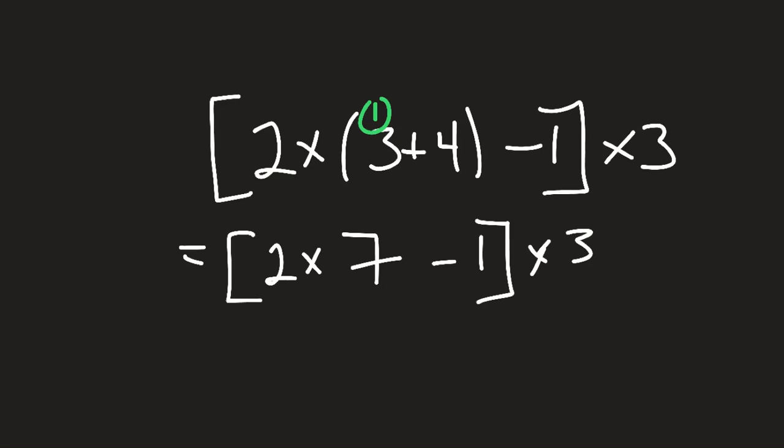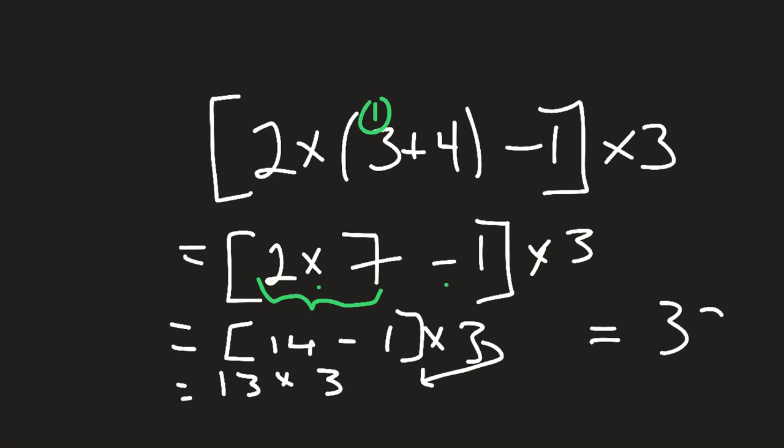7 minus 1 times 3. So we still got to work inside our brackets. Next, I'm going to do 2 times 7 because that's inside our brackets, and we always do multiplication before subtraction. So what's 2 times 7? It equals 14 minus 1 times 3. 14 minus 1 is 13 times 3. The times 3 came from right there. And then 13 times 3 is 39. I believe I can do that one in my head. Yes. That equals 39. So there.